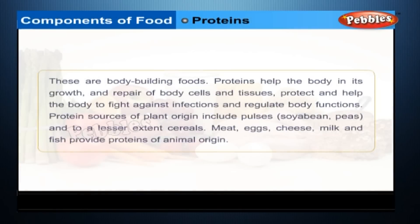Proteins: These are body-building foods. Proteins help the body in its growth and repair of body cells and tissues, protect and help the body fight against infections, and regulate body functions. Protein sources of plant origin include pulses, soya bean, peas, and to a lesser extent cereals. Meat, eggs, cheese, milk and fish provide proteins of animal origin.